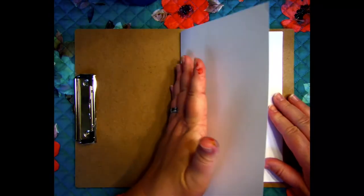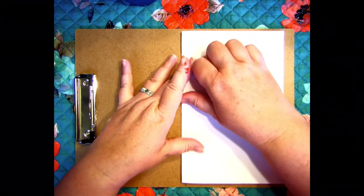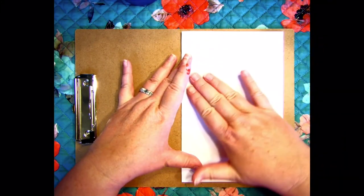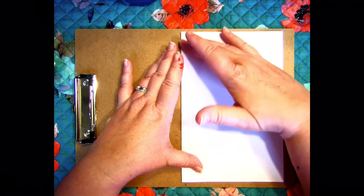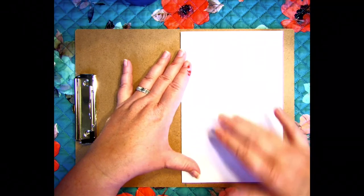Once you've added enough dots, fold your paper back closed and rub the paint around. Start at the fold and move outward. Be careful not to squirt paint out of the edges.